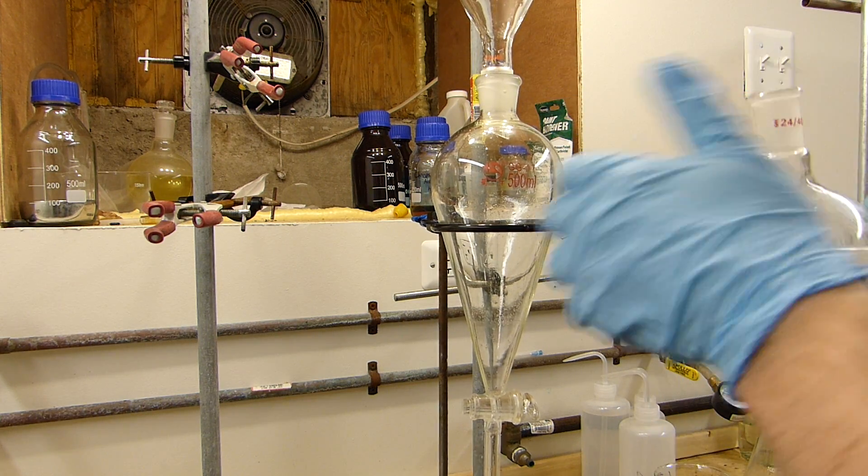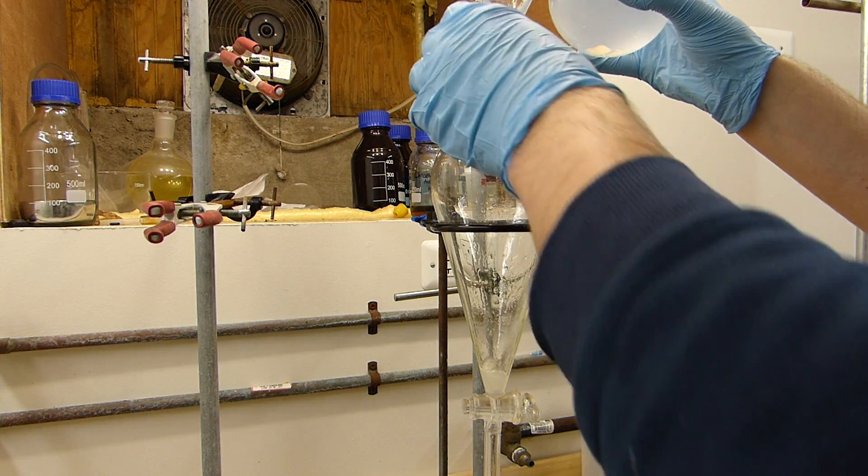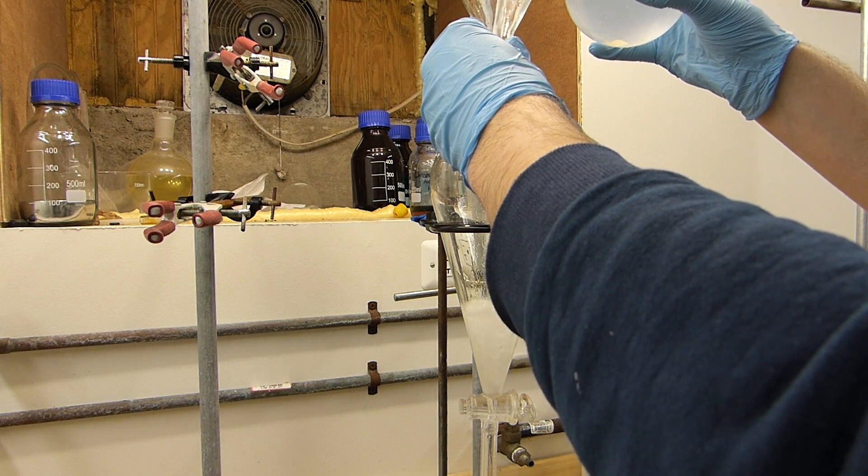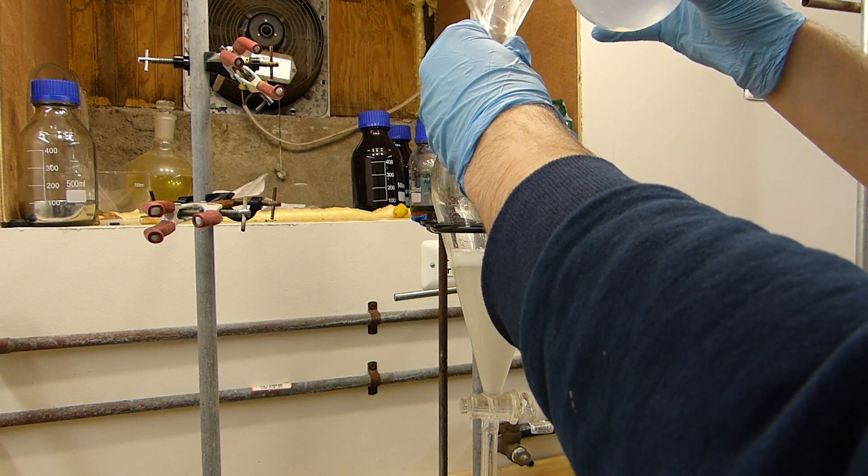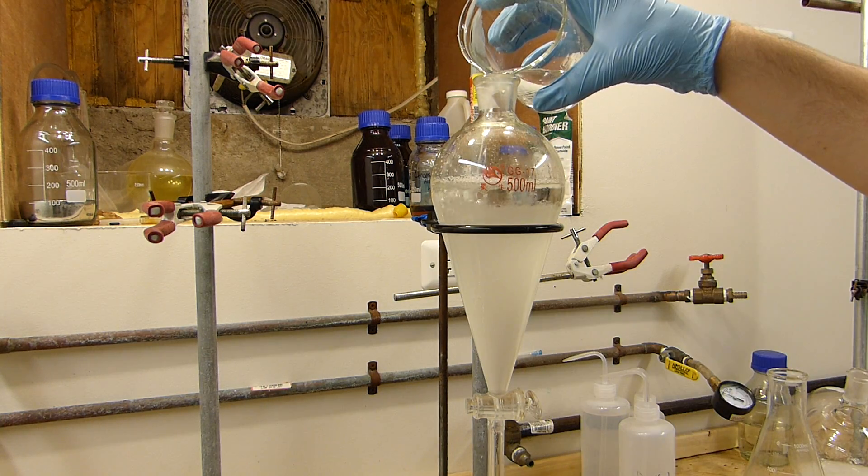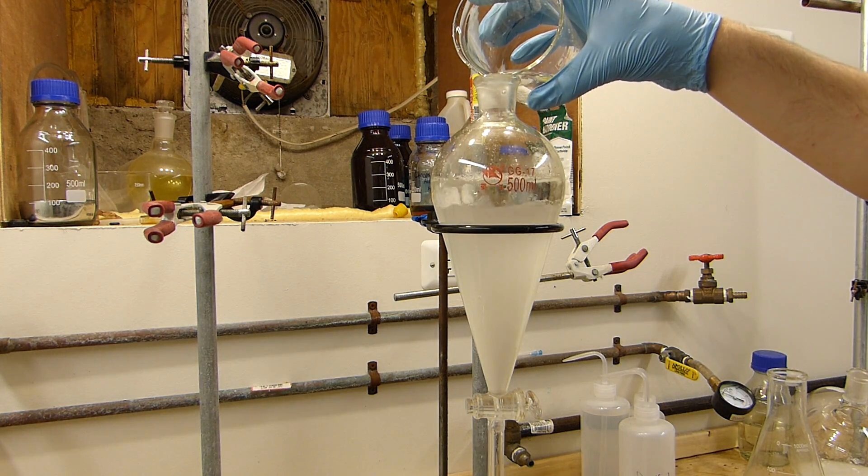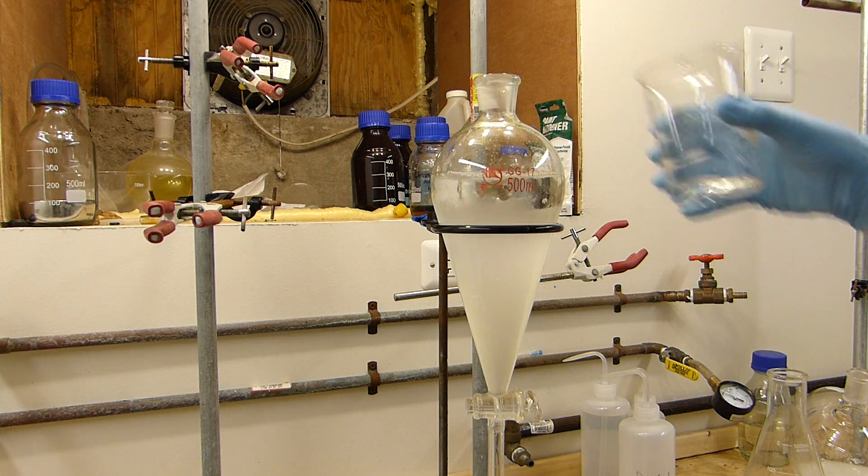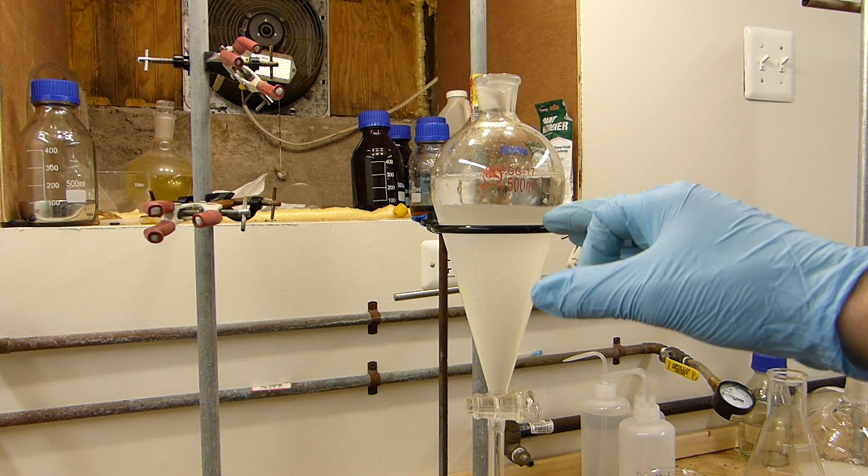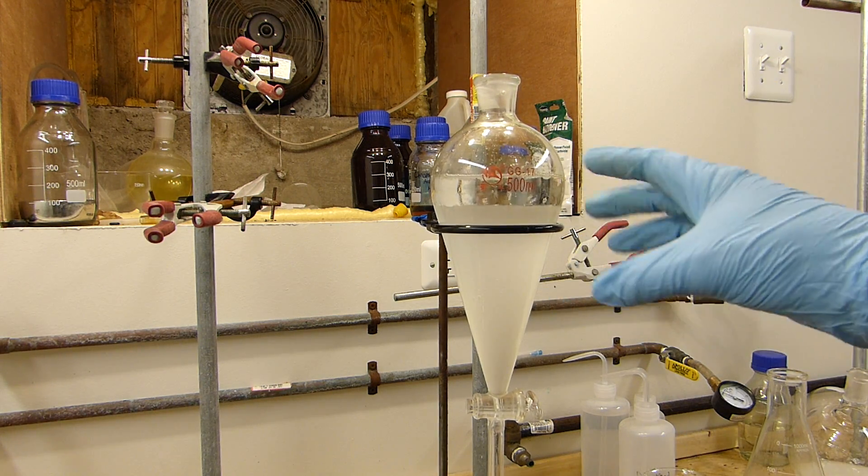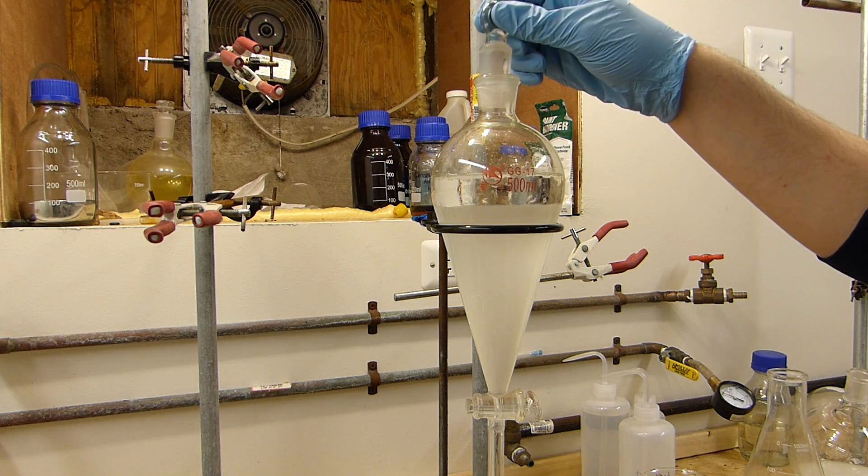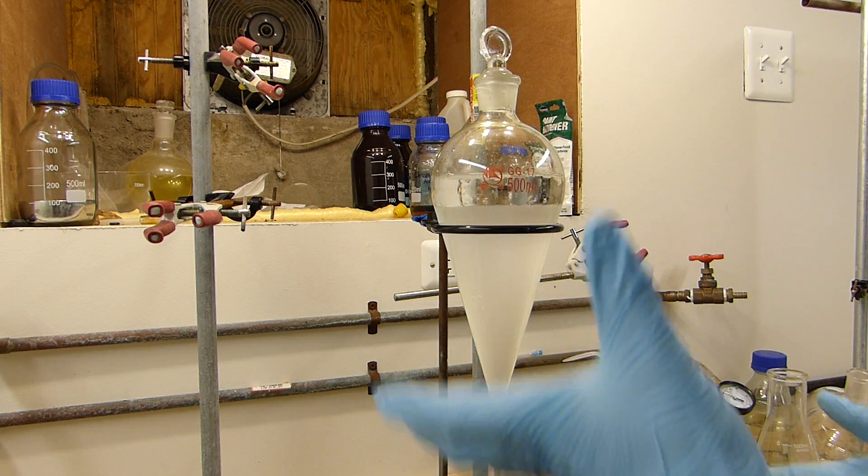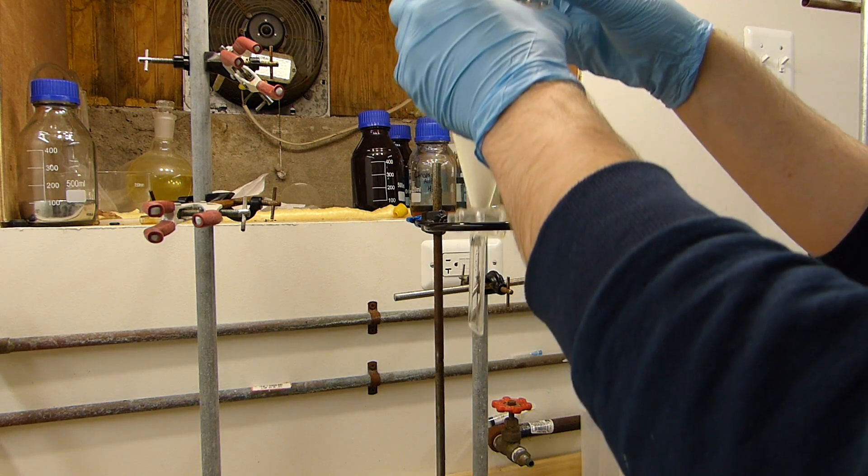And now to add the dichloromethane back to the funnel, first making sure the stopcock is closed, and I'm just going to repeat this process two more times. You can see that the second time the water layer separates out much more quickly, which indicates that this layer is now extremely hydrophobic and that's because we've washed most of the methanol off in the first washing. But this and one additional washing should separate it nearly completely.